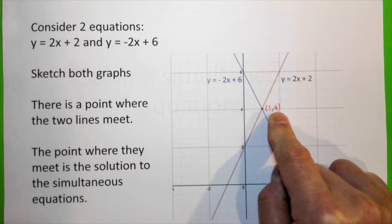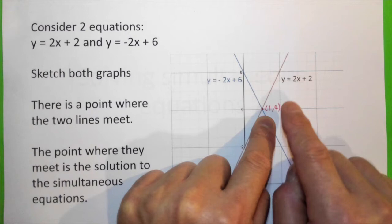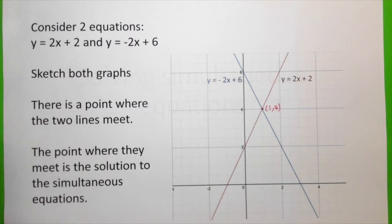Now, if we substitute x equals 1 into this equation, y should be 4. Similarly, if we substitute 1 into this equation, y is also 4. Therefore, we can say that this coordinate satisfies both equations, and this is the solution to the simultaneous equations.